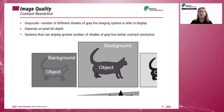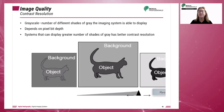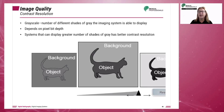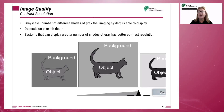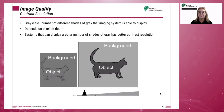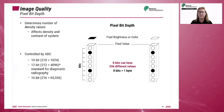Contrast resolution is the ability of the digital system to display various shades of gray and the ability to distinguish between small objects. Increased contrast resolution means that there are more shades of gray within the image and therefore the visibility of small anatomical structures is increased, which results in increased spatial resolution.